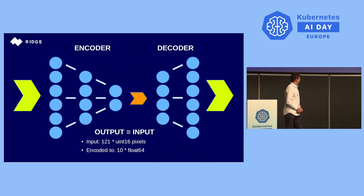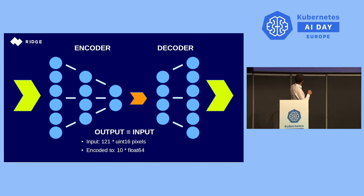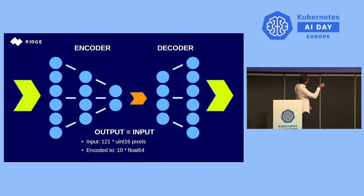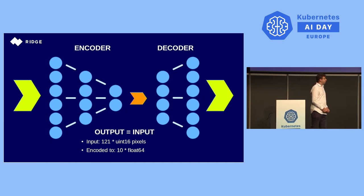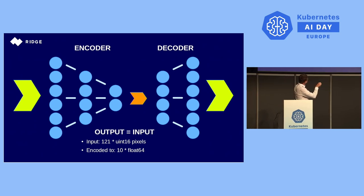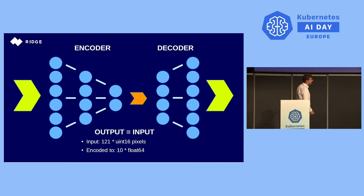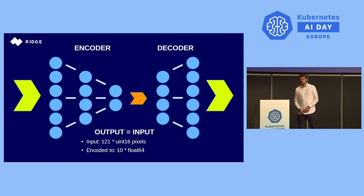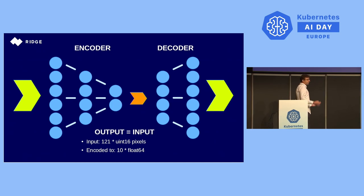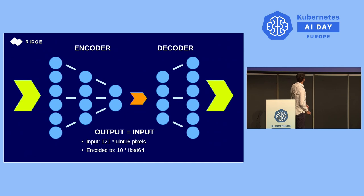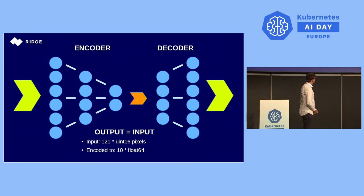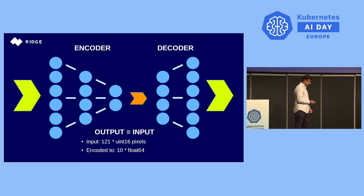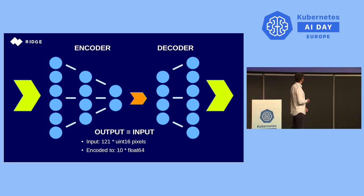We will train the autoencoder. You just feed the image to its input and train it to produce exactly the same output. The magic of this model is made by introducing a bottleneck: the number of neurons there is much smaller than the number of inputs and outputs. By doing this, we force the neural network to generalize information and find patterns which might be useful. In our case, we fit 11 by 11 images — giving 121 16-bit integers on the input — and encode it down to 10 64-bit float numbers.